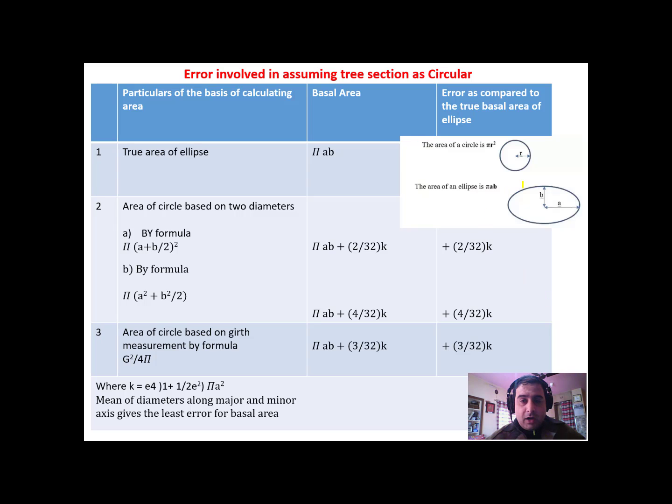The area of tree we assumed to be a circle, but actually it resembles more to an ellipse. It has one shorter end and one longer end. So we have to take both the diameters into consideration. When we take diameter at breast height, we have to take both shortest distance diameter and longer distance diameter.